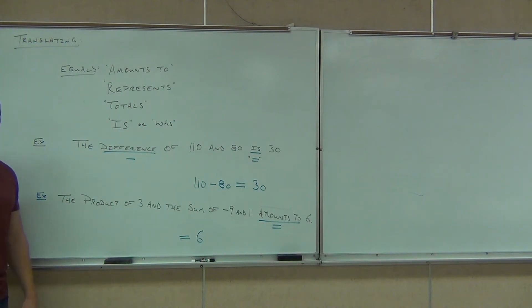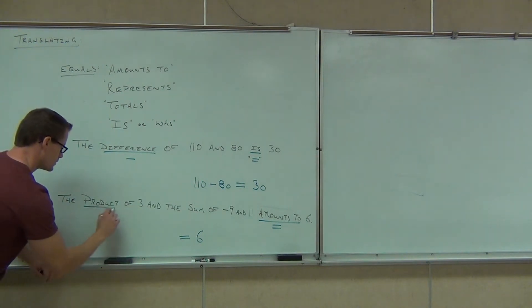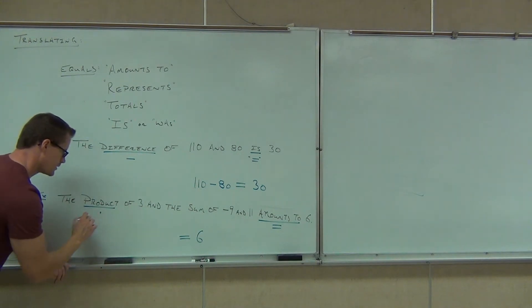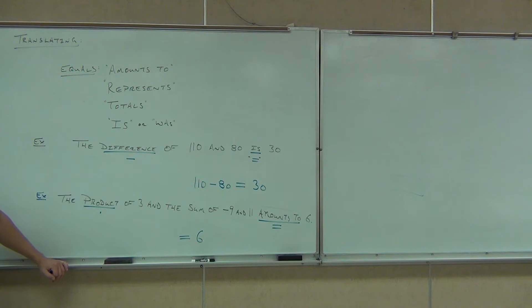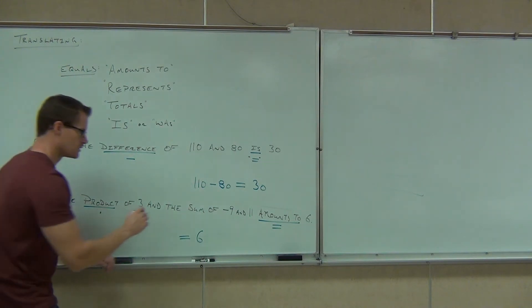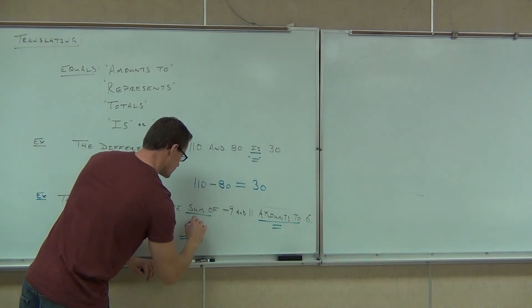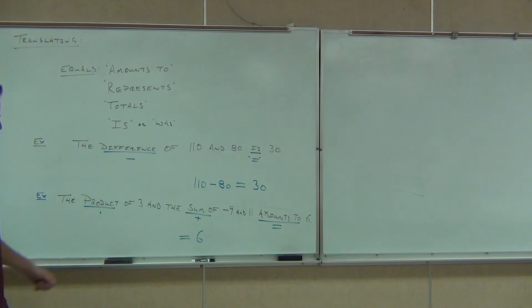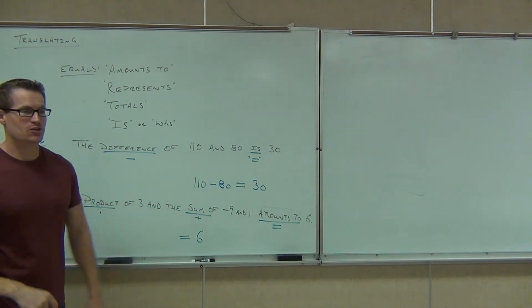Product. Good. What does product mean? Multiply. No, multiply. Okay, we're multiplying. What else? Sum. Sum. What does sum mean? Add. I'm going to have those backwards. It's all right. The product we're multiplying. The sum we're adding for sure.